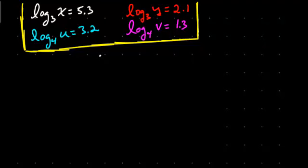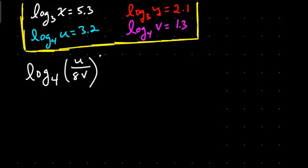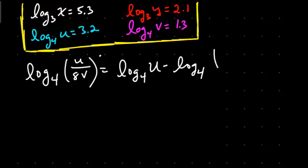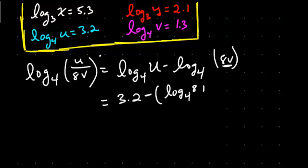Let's work through some more. Log base 4 of u divided by 8v. So this is going to equal — when we're dividing, we're subtracting the exponents — so that's going to be log base 4 of u minus log base 4 of 8v. And now we're multiplying inside 8v, so that's minus log base 4 of 8 plus log base 4 of v.